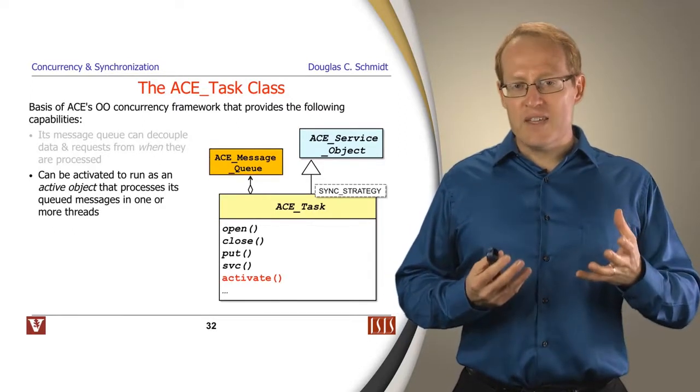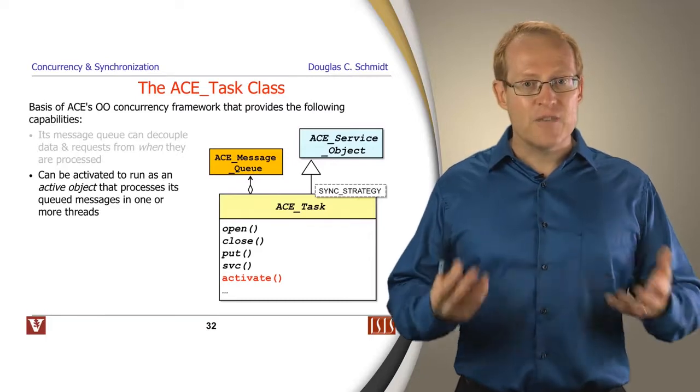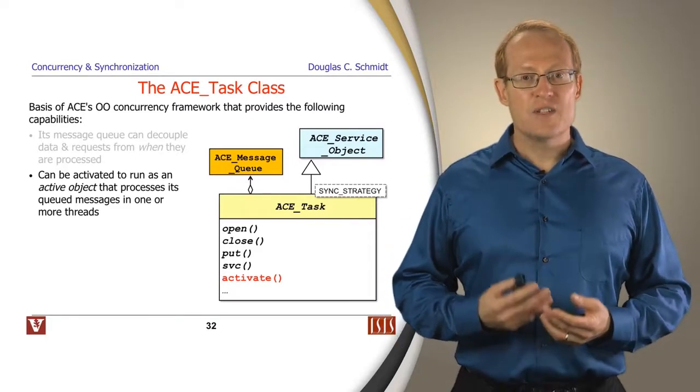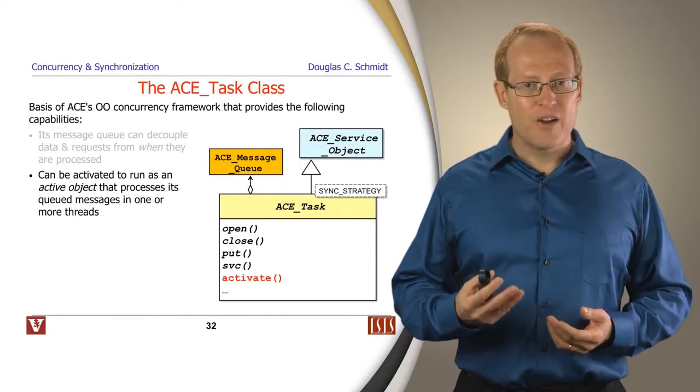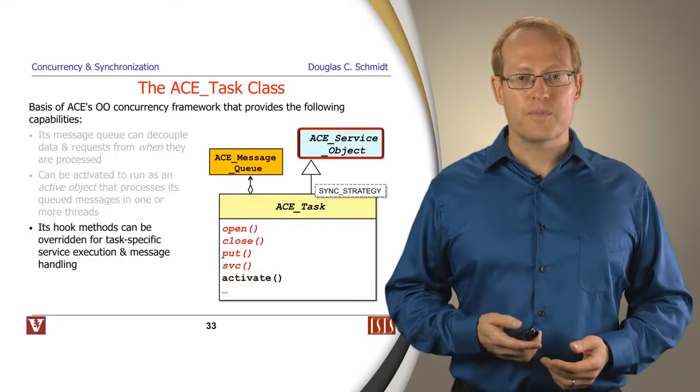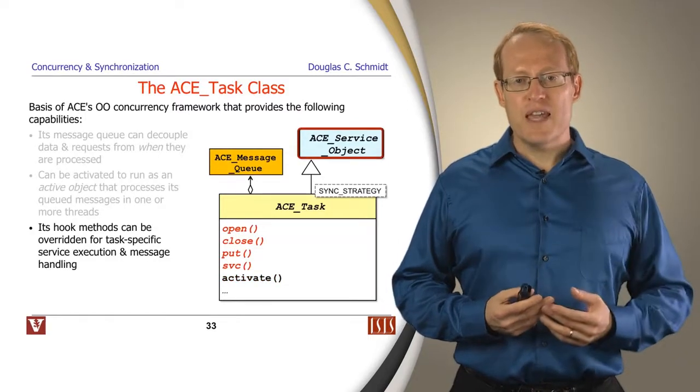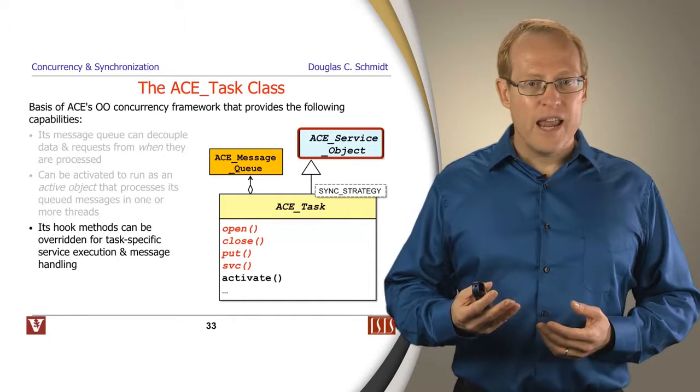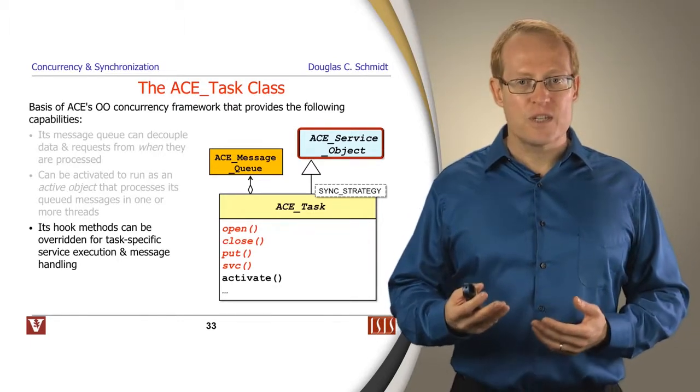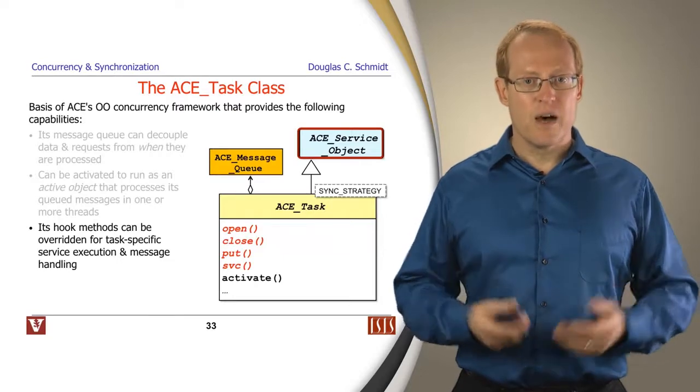You can take an ACE task object and you can activate it, which means one or more threads will then start to run. And these threads can then run in the background and process the requests that come to them via the message queue. The hook methods that ACE task provides can be selectively overridden in order to handle various application or service specific concurrency and queuing disciplines and models.